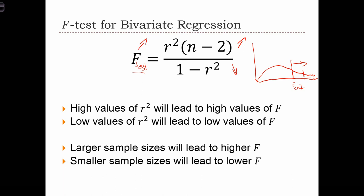Alternatively, if we have a lower value of r squared, F is going to decrease. So higher r squared is going to move F in that direction, and lower r squared is going to move F in that direction, to the left.